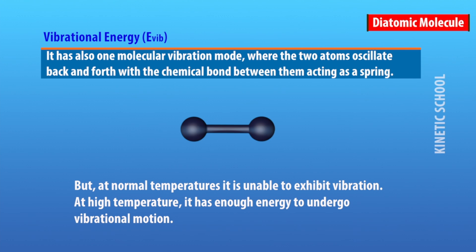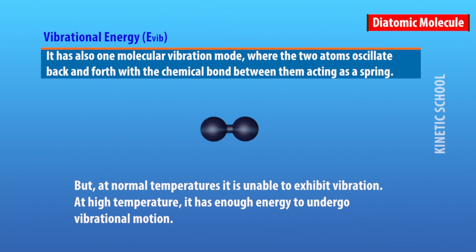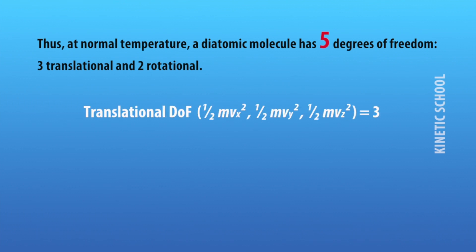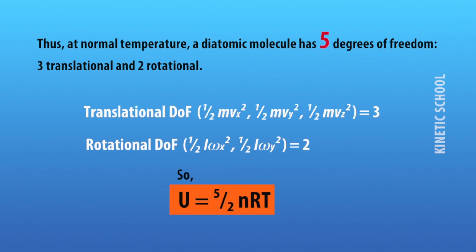At normal temperatures a diatomic molecule is unable to exhibit vibrational motion. At high temperatures it has enough energy to undergo vibrational motion. Thus at normal temperature a diatomic molecule has five degrees of freedom — three translational and two rotational — so U = (5/2)nRT.